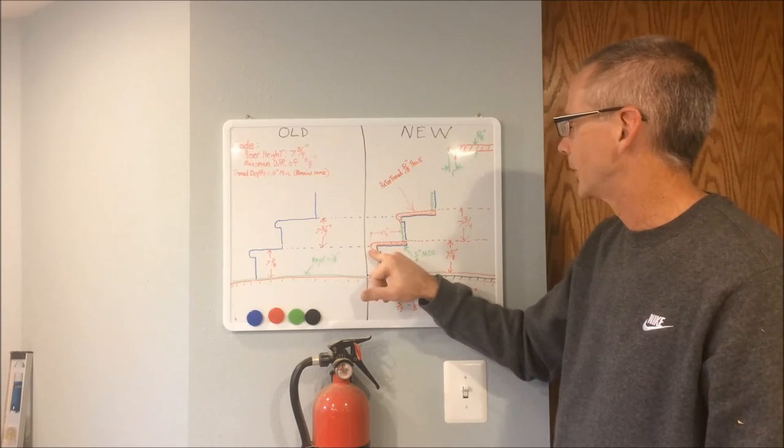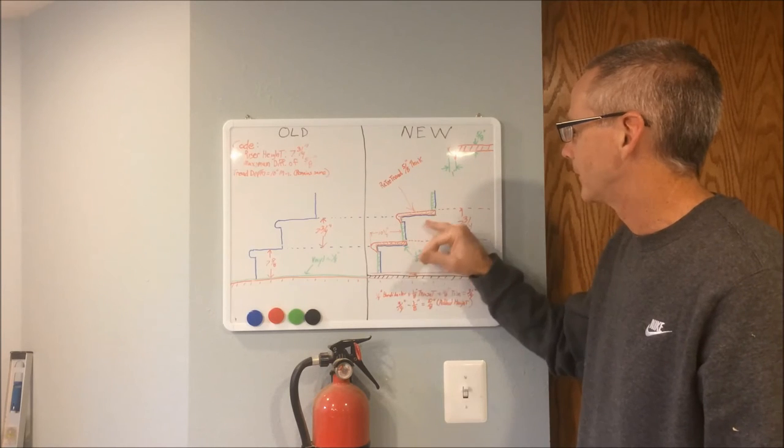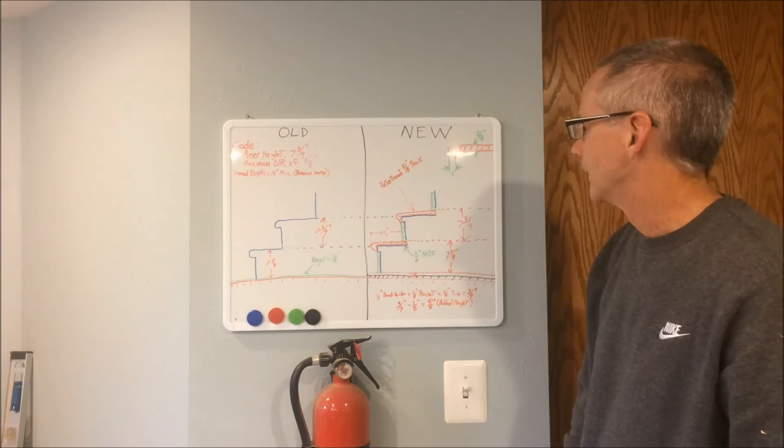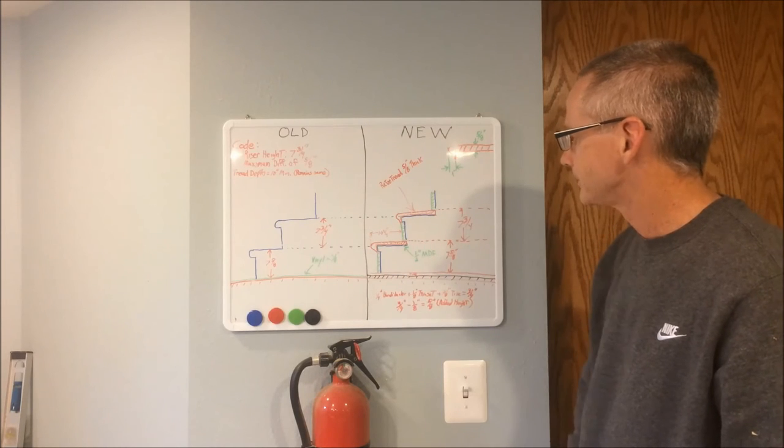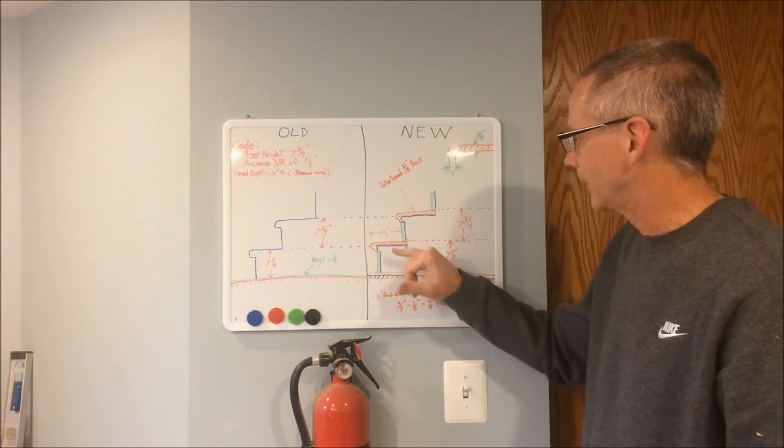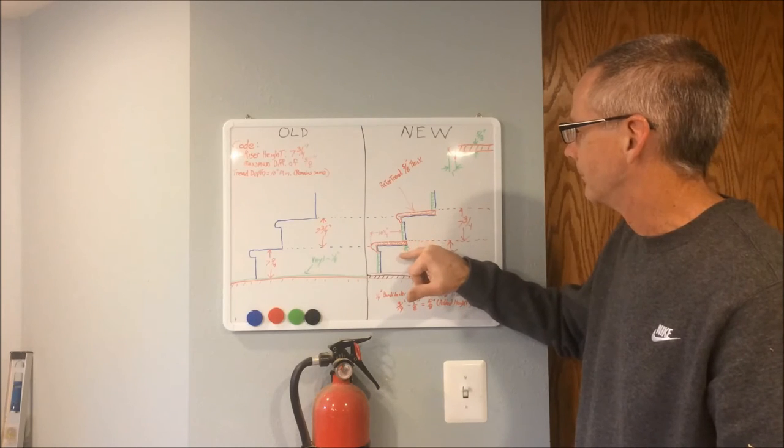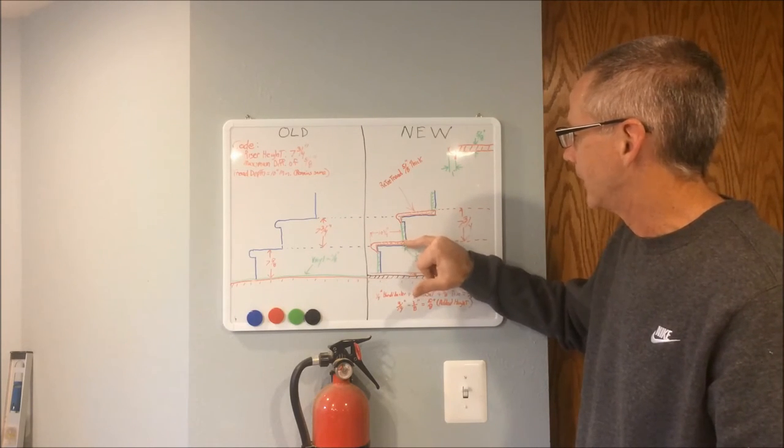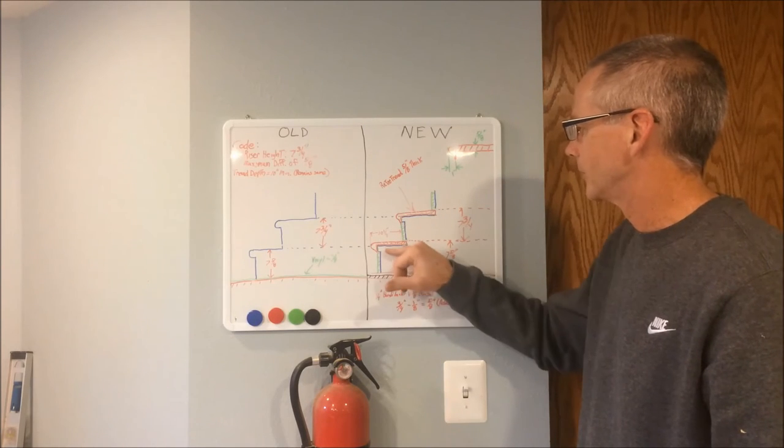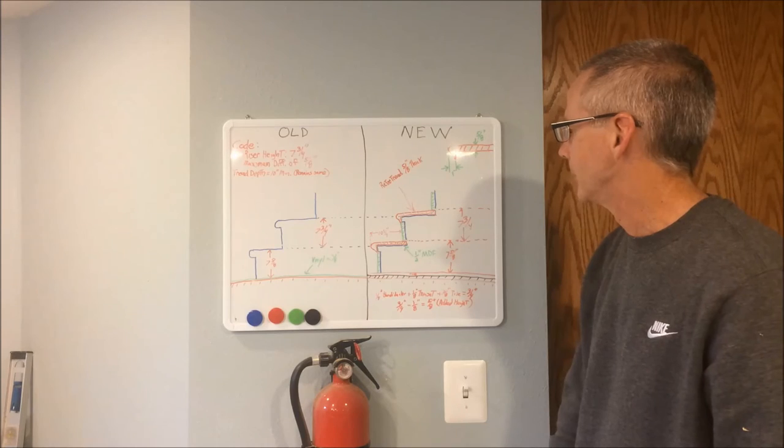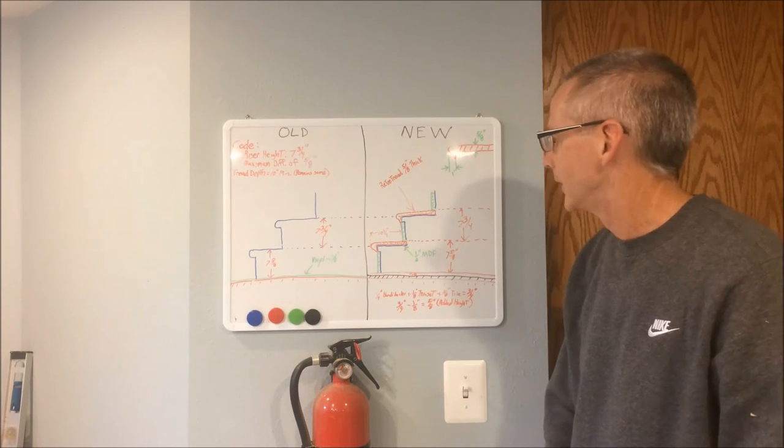My tread depth was within code. When I put these treads on, the way I applied them, I used liquid nails and applied the liquid nails, put them down, and then I shot finished nails through the back so I could nail this in the back where it was going to be covered by the MDF. The rest of it was just pressed down and I just glued them in. They seem to be pretty good. I've had them down for quite a while. There's not a lot of squeak in there, so everything seemed to work out well.